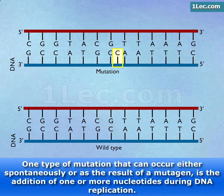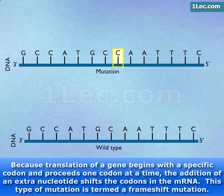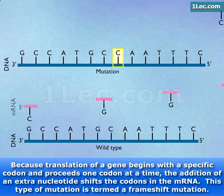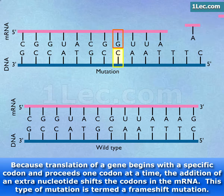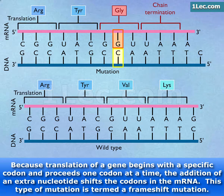One type of mutation that can occur either spontaneously or as the result of a mutagen is the addition of one or more nucleotides during DNA replication. Because translation of a gene begins with a specific codon and proceeds one codon at a time, the addition of an extra nucleotide shifts the codons in the mRNA. This type of mutation is termed a frameshift mutation.